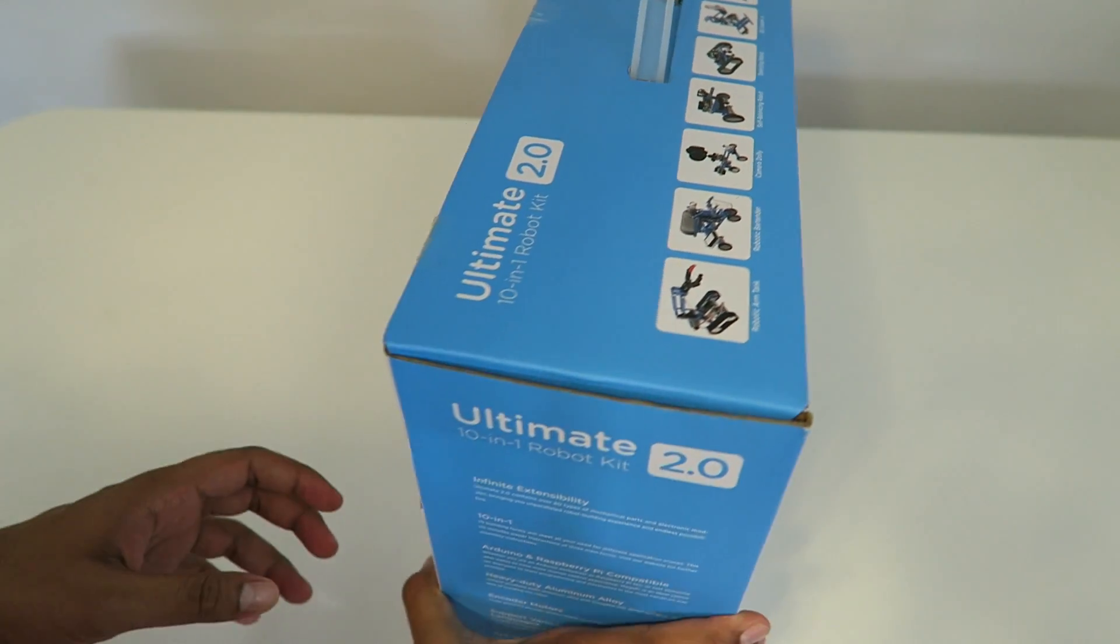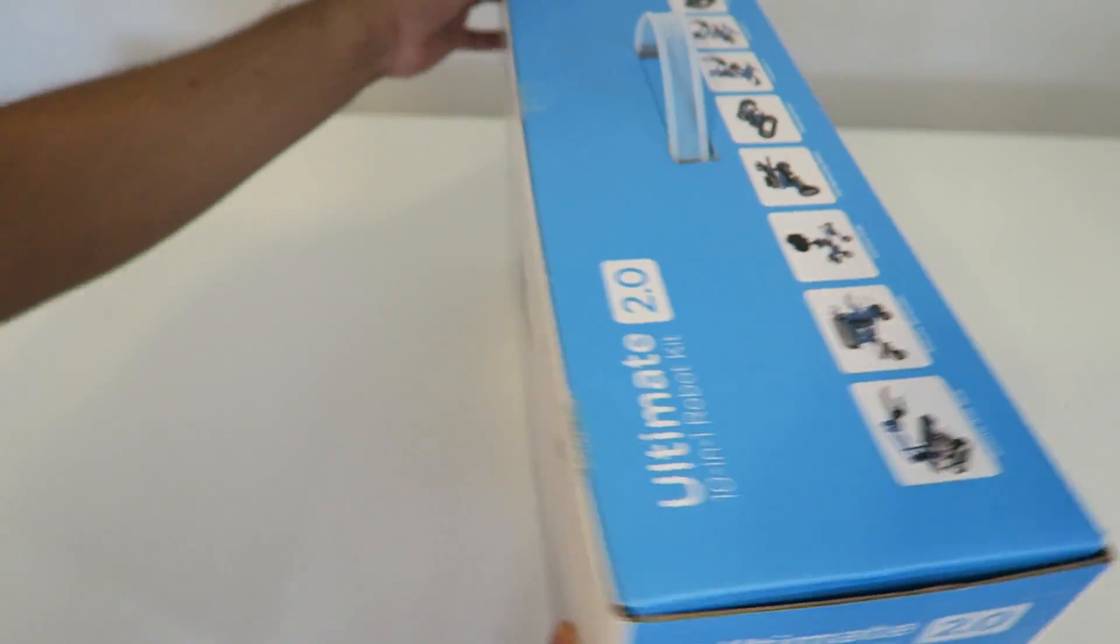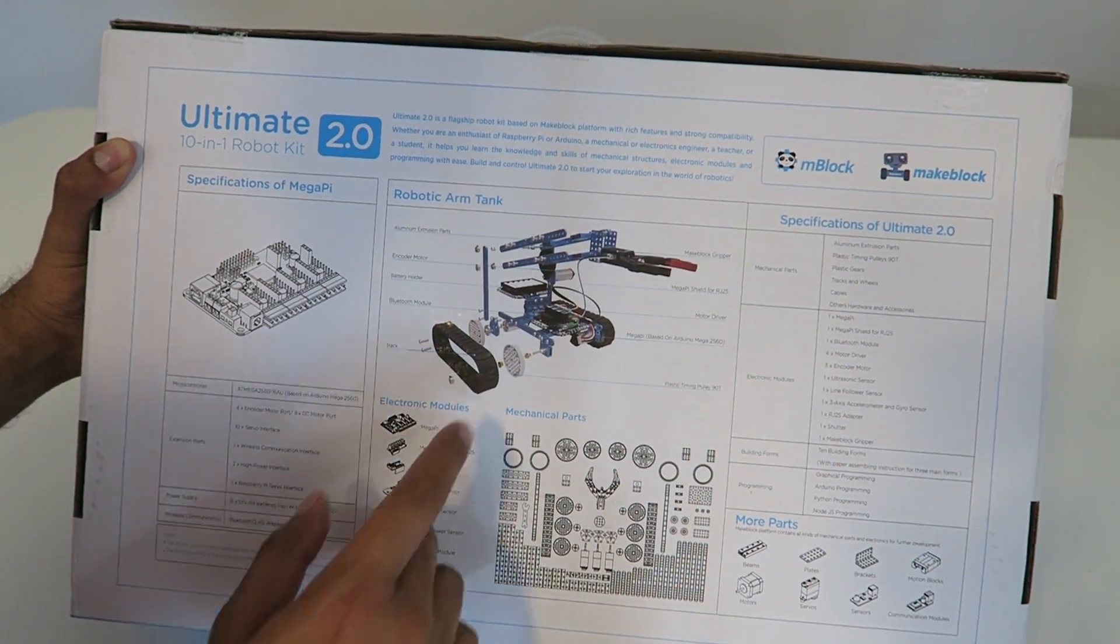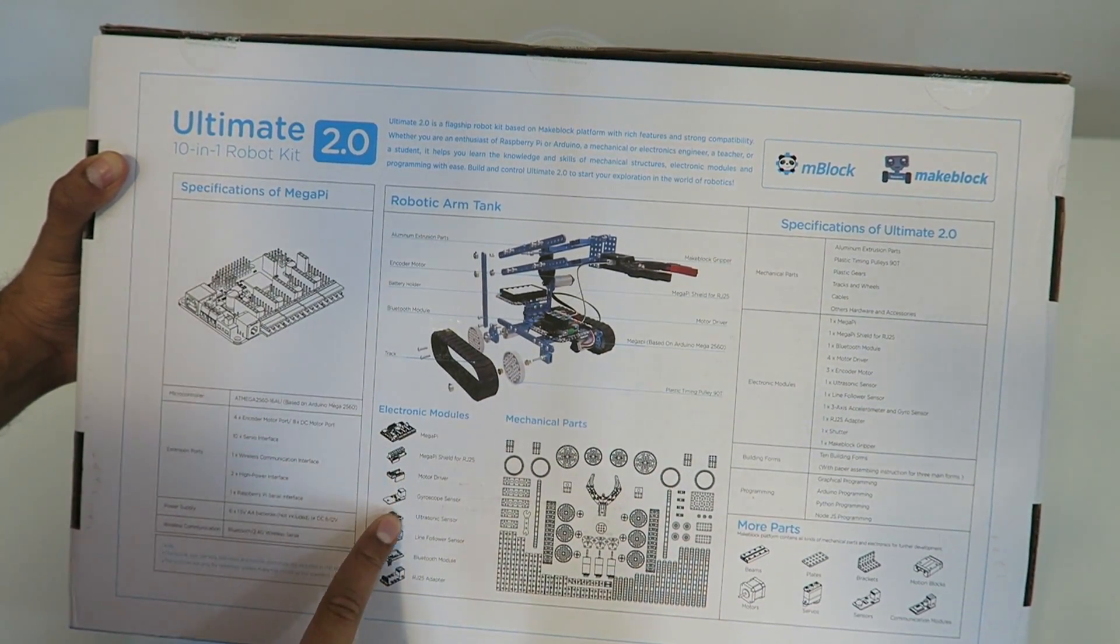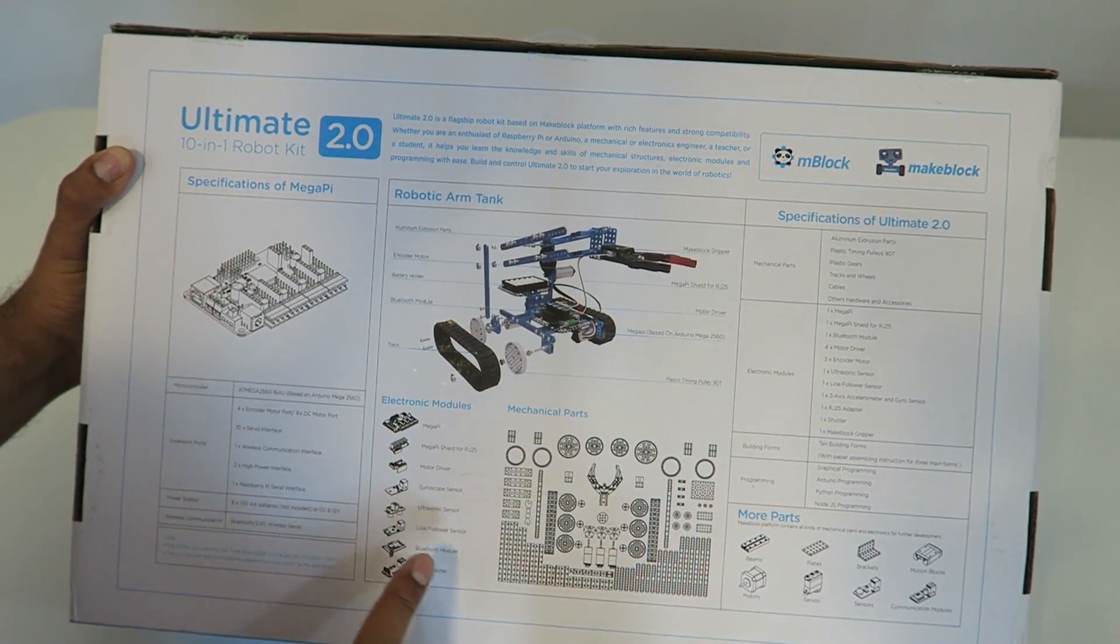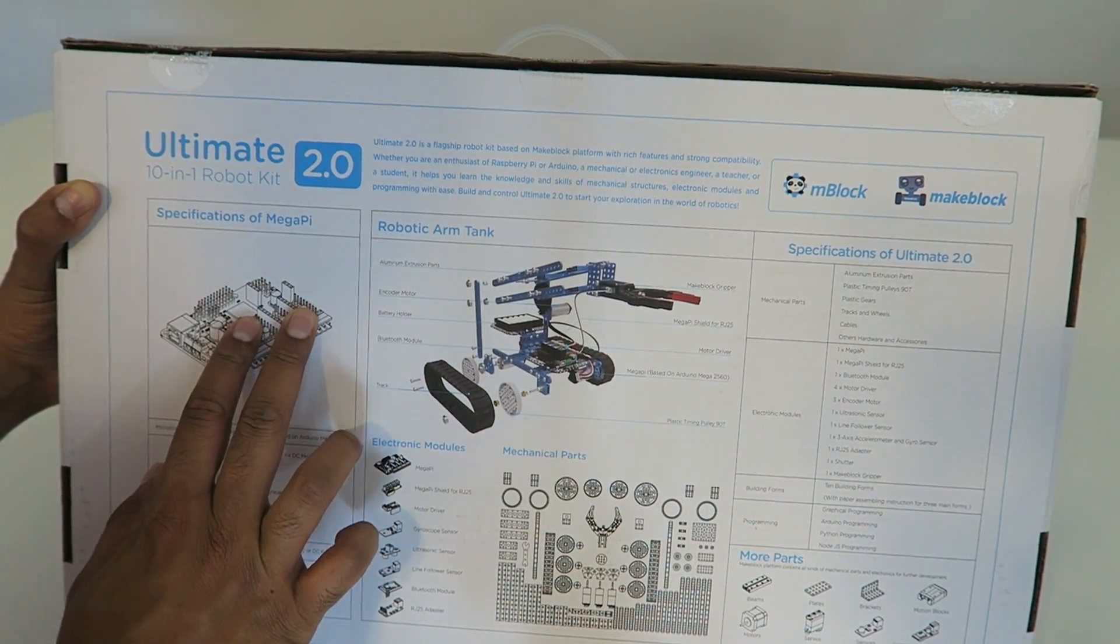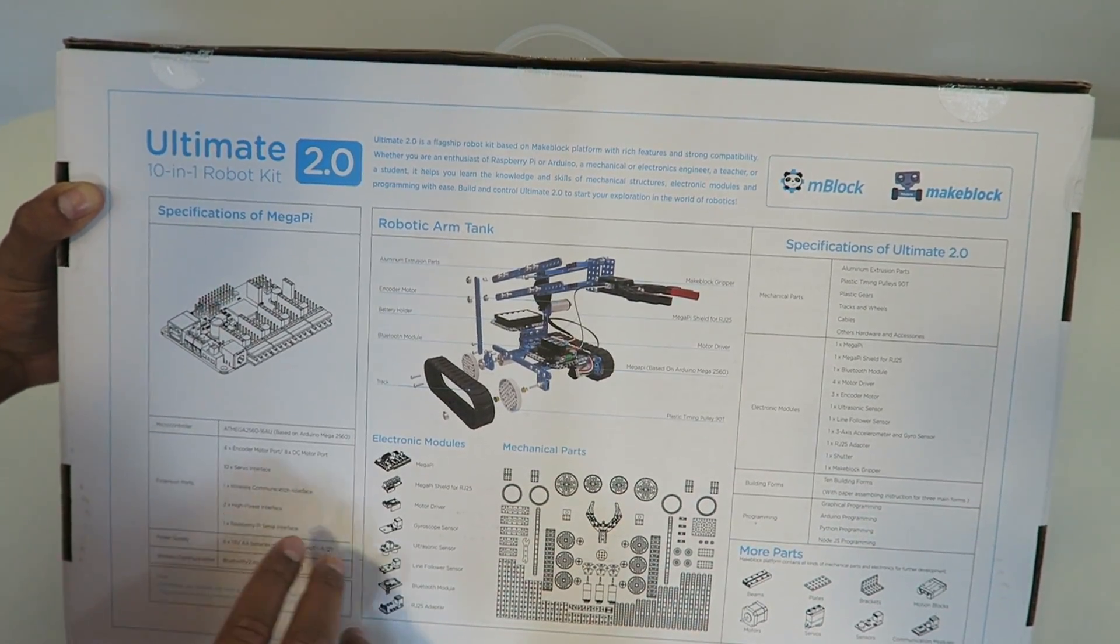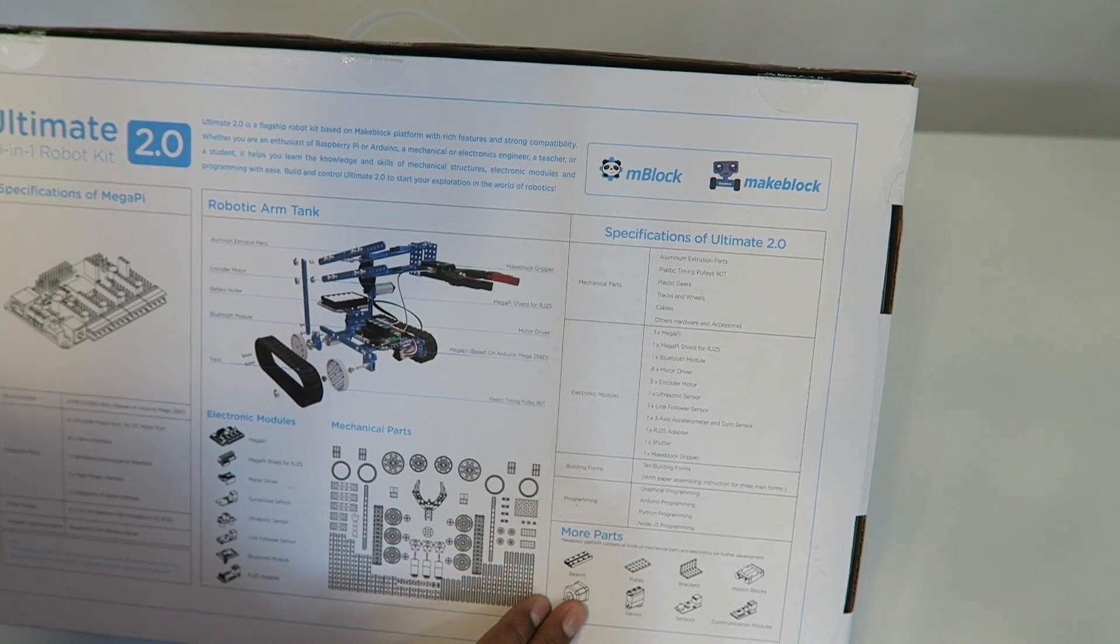Now on the side here, it kind of goes in a little bit more details about what's included. And then on the back here, it shows all the different specs that you can actually see. So this here's a robotic tank. Kind of shows the blueprint of it. It shows all the different electronic modules. So you do get a Mega Pi. Here's all the mechanical parts here. And then a little bit more specifications on the Mega Pi itself. And how you can actually control it, the battery supply, and then specifications on the kit itself. All the different parts that are included.